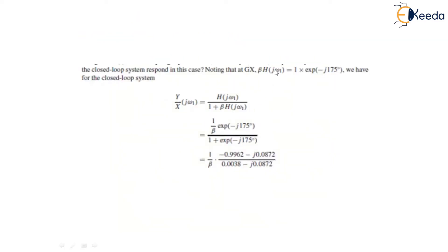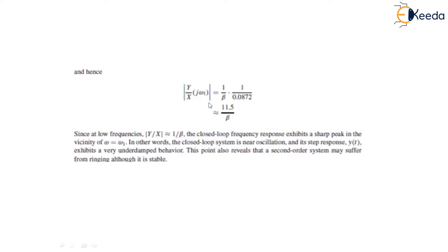We take the loop gain βH(jω) equal to e^(−j175°). For the closed loop system, Y/X at jω₁ equals H(jω₁) divided by 1 plus βH(jω₁). Substituting all values, H(jω₁) can be written as (1/β)e^(−j175°). Substituting into the equation and converting to the complex imaginary form and solving further, the magnitude of the closed loop gain evaluates to 11.5/β.